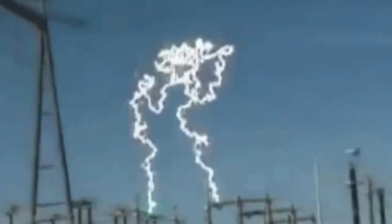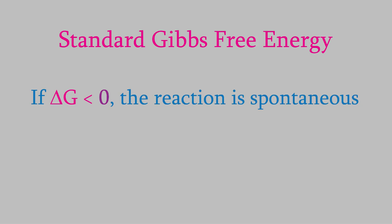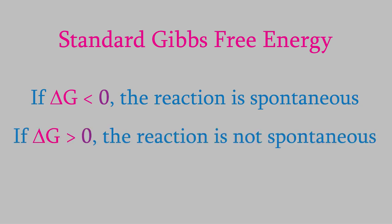You might remember that back in videos 29 and 30, we talked about the Gibbs free energy, which tells us whether or not a reaction is spontaneous. If delta G is negative, the reaction is spontaneous, and if it's positive, the reaction is not spontaneous.